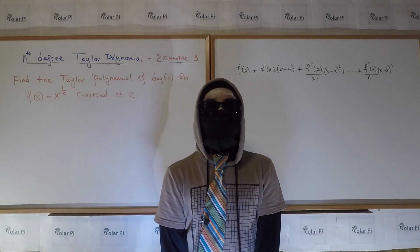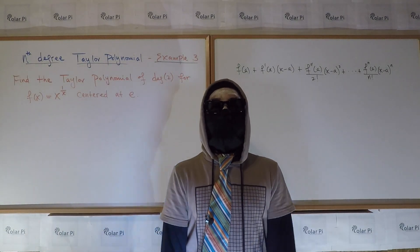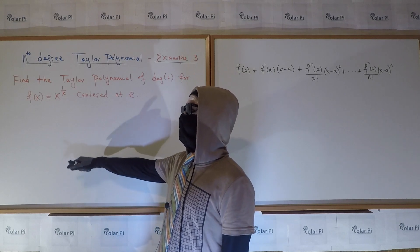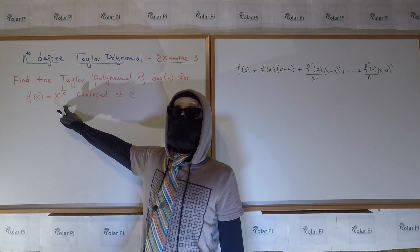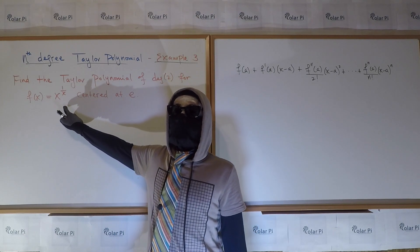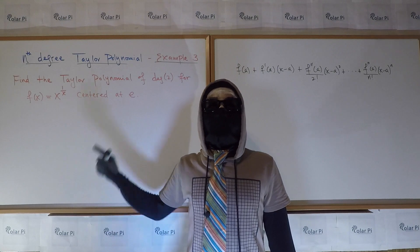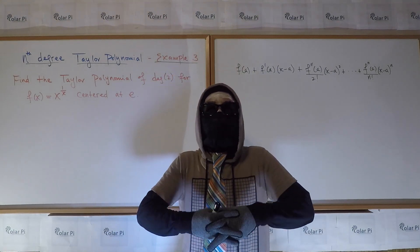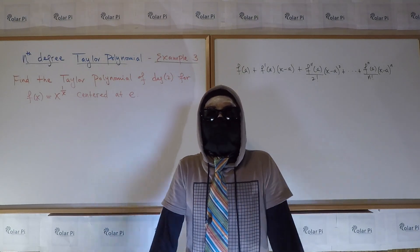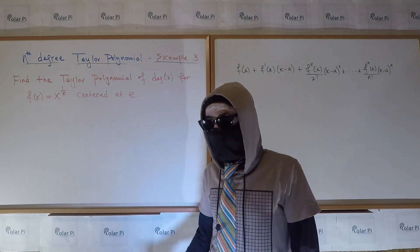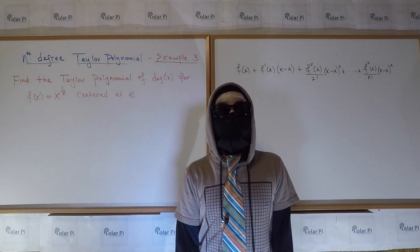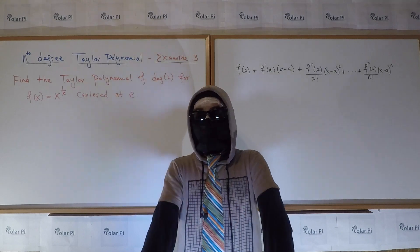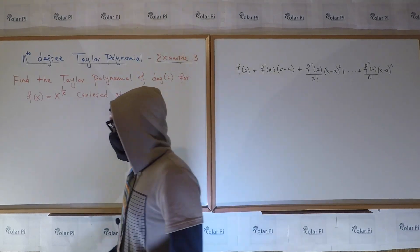Hey guys, welcome. So in this video, I'm going to show you how to find the second degree Taylor polynomial for the function f of x equals x to the 1 over x, centered at e. This is example three, and I haven't yet made videos on examples one and two because it's not as fun as this video. May the Lord Jesus Christ bless this video, bless you and I, and here we go.